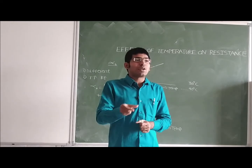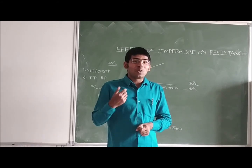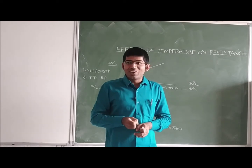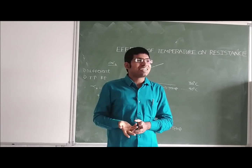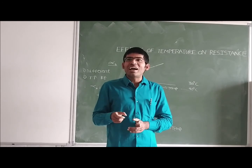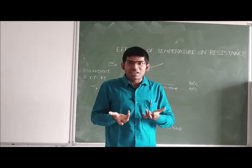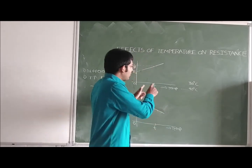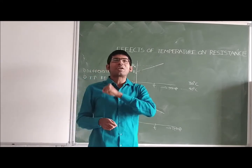If you take that gold ornament to Antarctica, where the temperature may be 0 degrees centigrade, the gold exhibits a very minimal amount of resistance. If we take that gold ornament to the Thar desert or Sahara desert, the gold ornament will give a very high amount of resistance. So for metals, when the temperature is incrementing, the resistance is incrementing, which is why metals exhibit a positive temperature coefficient.